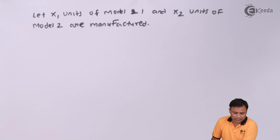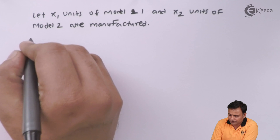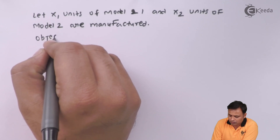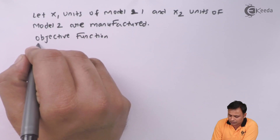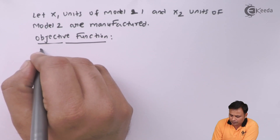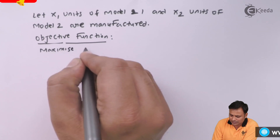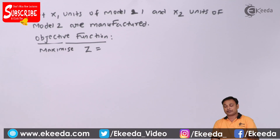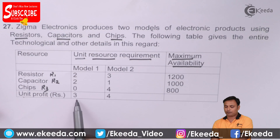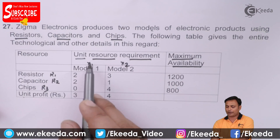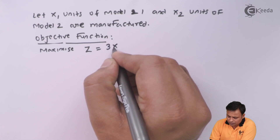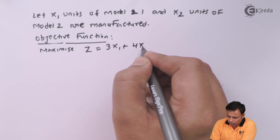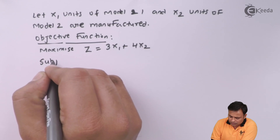Now our objective will be to maximize the profit, since we are given the profit. So our objective function will be: maximize Z = 3x1 + 4x2. Here, 3 rupees is the profit per unit of x1 and 4 rupees for x2, giving us the total profit which we need to maximize. So: maximize Z = 3x1 + 4x2, subject to the following constraints.